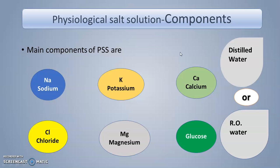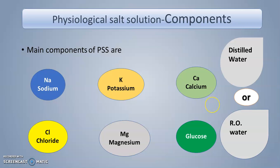The main components to be added as salts include sodium, chloride, potassium, magnesium, calcium, and glucose. The vehicle should be distilled water or RO water — distilled water is preferred. Tap water is not preferred because it may contain heavy metals, which can lead to the development of turbidity. That is why distilled water or RO water is used.